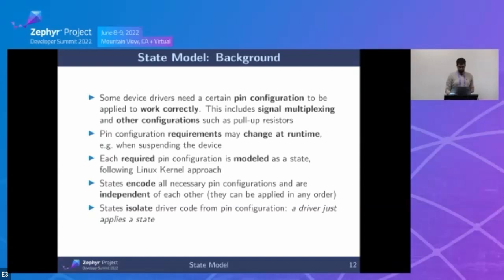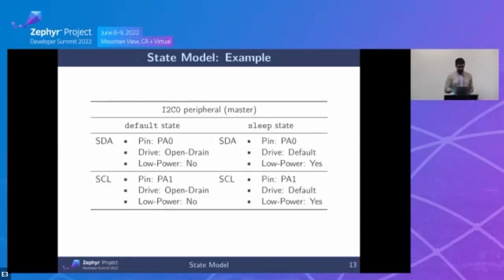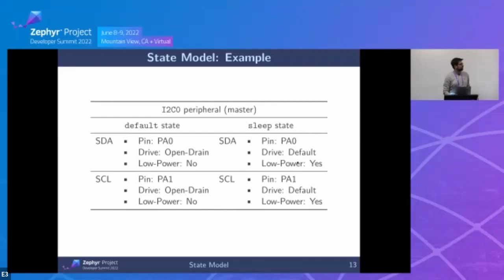Here's an example for an I2C peripheral. The default state encodes: for the SDA signal, pin PA0, drive mode open drain, low-power mode not enabled; similarly for SCL. For the sleep state, drive mode is not set but low-power settings are enabled for both pins. So a driver has no pin-related code — it just applies states.